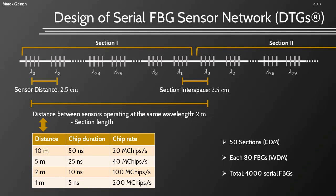Here you can see the design of our 4,000 FBG sensor network. The FBG sensors are so-called draw tower gratings, DTGs. We have several WDM sections with sensors operating at different wavelengths, multiplexed by WDM. There are 80 different wavelengths in one section — first all even wavelengths upwards and then all odd wavelengths downwards. The distance between the sensors is set to 2.5 centimeters. The whole network contains 50 of these identical sections placed right behind each other, so that the distance between the last and the first sensor of the next section is also 2.5 centimeters, achieving an equal distribution of sensors. The distance between sensors operating at the same wavelength is 2 meters, which also equals the section length.